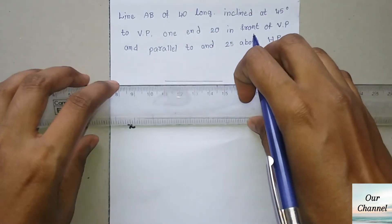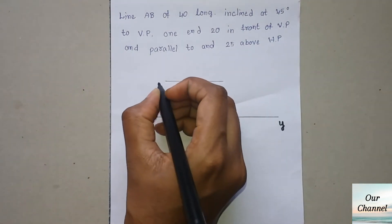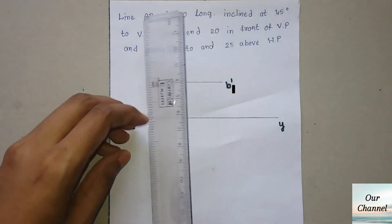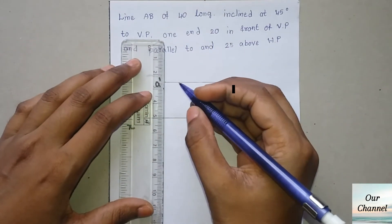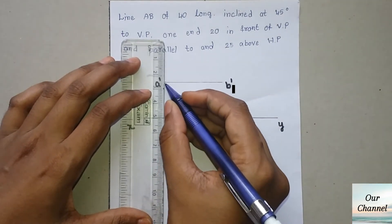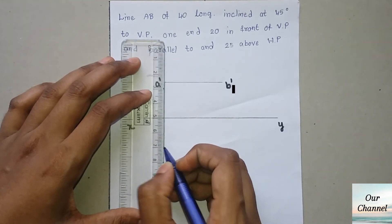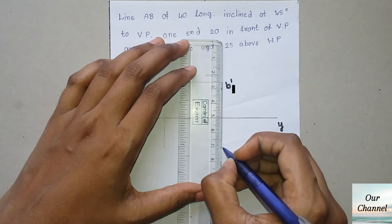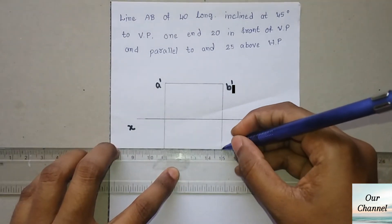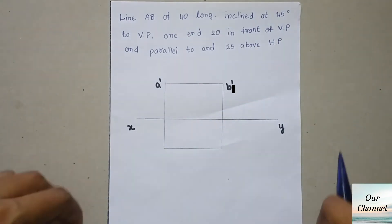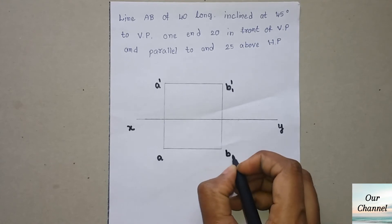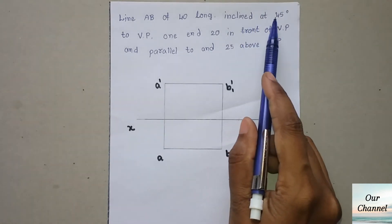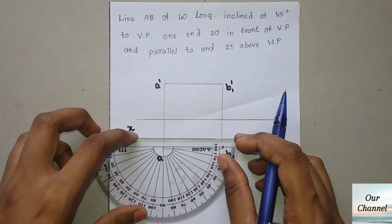Draw a 40 mm long line. As it is the front view, label it a dash and b1 dash. Now draw the line parallel to VP — that is 20 mm in front of VP, meaning below XY. Take 20 mm from a dash and also from b1 dash. Label these points a and b1, because this is not the true length — we are just assuming it to be parallel and drawing accordingly.